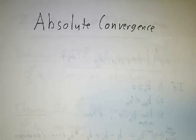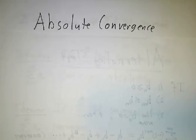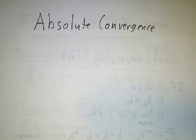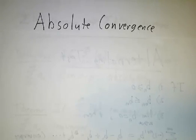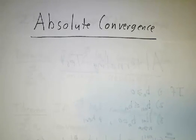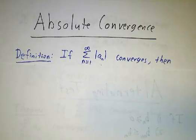If the terms alternate between positive and negative, then we have some tools for dealing with it. But if a series has a bunch of positive terms and a bunch of negative terms without any special pattern about positive or negative, then you wonder what to do. And the trick is to look at the absolute values.